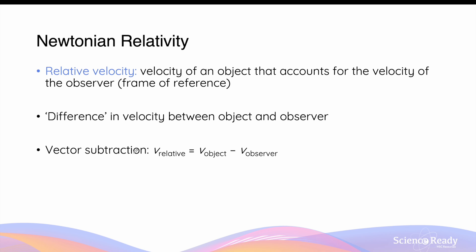In terms of vectors, relative velocity can be determined via vector subtraction — that is, the relative velocity is equal to the velocity of the object minus the velocity of the observer.